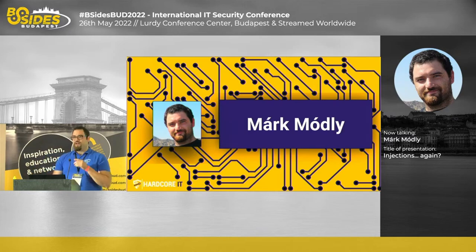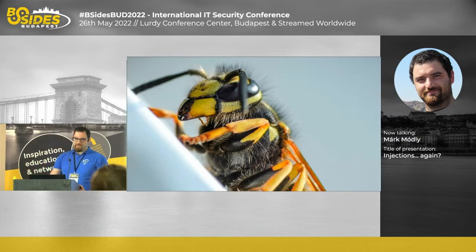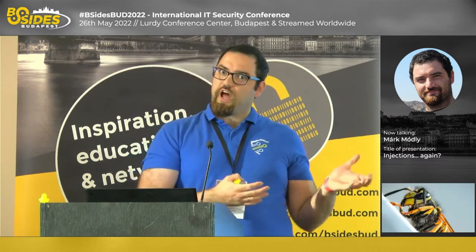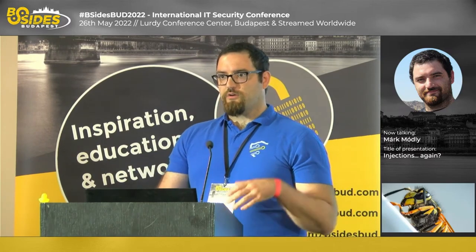There is another company — or I would say organization — which is quite fond of injections, and this logo should help us out. This is called OWASP: the Open Web Application Security Project. They have quite a few projects which I really adore. One of those is the OWASP Top 10. I really like the Threat Dragon, which is a threat modeling tool provided by OWASP, completely free, and the ZAP — the Z-Attack Proxy — as well. I really like this project because it sums up the most recent vulnerabilities.